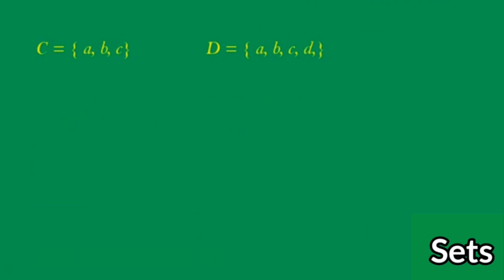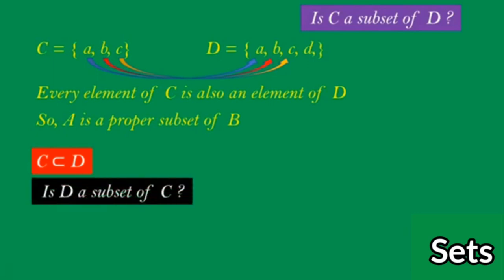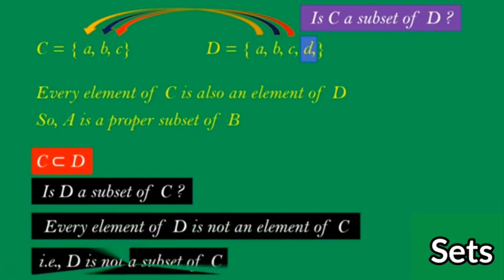Now look at this example. C is set of {a, b, c} and D is set of {a, b, c, d}. Is C a subset of D? We check if every element of C is also an element of D — yes, it is. So C is a proper subset of D. We write: C is a proper subset of D. Is D a subset of C? D has element 'd', but that element is not in C. So D is not a subset of C.